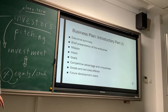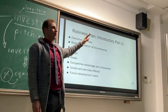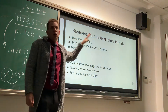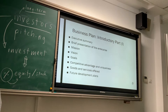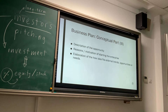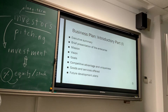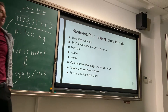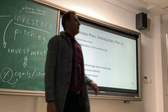A business plan usually has roughly four types of parts. First, the introductory part. Then the analytical part, the conceptual part, and finally the operational part. I'm going to go through them one by one briefly.